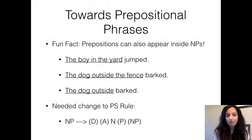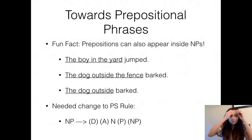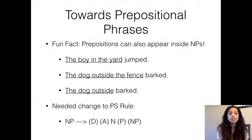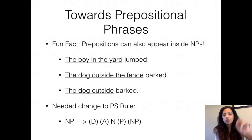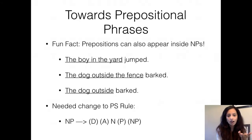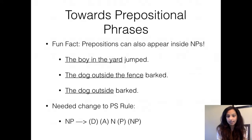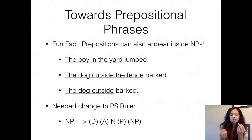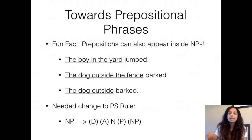Now that we have an intuitive understanding of noun phrases and verb phrases, let's get into prepositional phrases. Prepositional phrases can appear inside noun phrases. For example: 'the boy in the yard jumped,' 'the dog outside the fence barked,' 'the dog outside barked.' The current NP rule — optional D, optional A, and N — doesn't work here, because in 'the boy in the yard,' after the noun 'boy' you have a preposition and another NP. So we want to change the NP rule to: optional D, optional A, a noun, an optional P, and an optional NP.